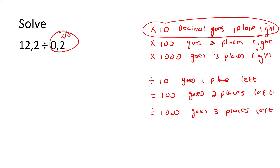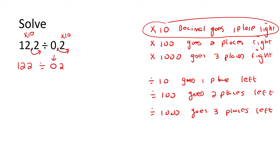But what you do to this one, you have to do to this one — that's the thing you need to remember. So if we multiply this one by 10, the decimal goes one place to the right, so it becomes 122. And if you multiply this one by 10, it goes one place to the right, so it becomes 02. But a zero in the front like that, when there's no decimals, you can just ignore it completely. So now we actually just have this — this has become our brand new question.